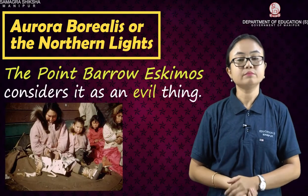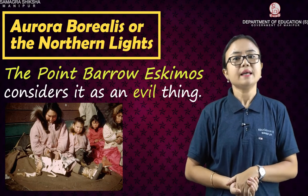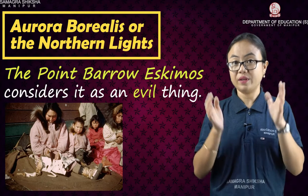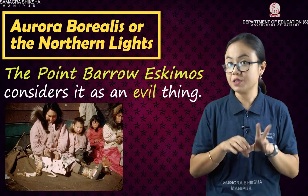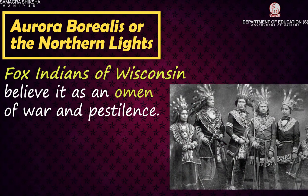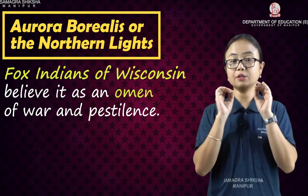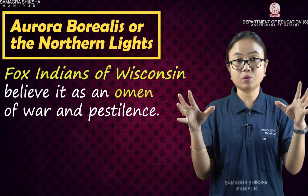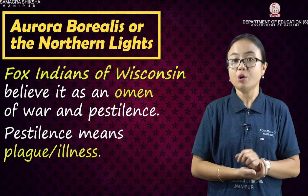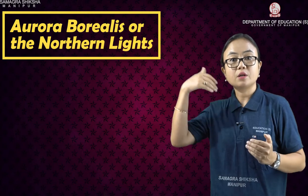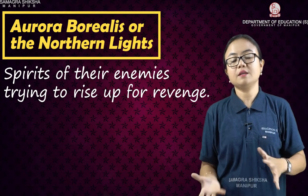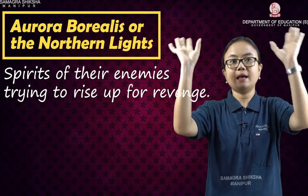The Point Barrow Eskimo, who reside mostly in the Arctic area, believe that this light is an evil thing. Whenever this light appears, they say something evil is happening, so they carry knives to protect themselves. For the Foxes Indians of Wisconsin in North America, it is an omen of war and pestilence — pestilence being a plague, the spread of illness or disease. They believe the ghosts of slain enemies are trying to rise up for revenge, and when they try to rise up, the lights appear.